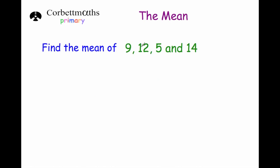For instance, if we were given the numbers 9, 12, 5, and 14, we would add them up. So 14, 12, 9, and 5. Adding them up gives 4 plus 2 is 6, plus 9 is 15, plus 5 is 20, so put the 0 down and carry the 2. 1 plus 1 plus 2 is 4.